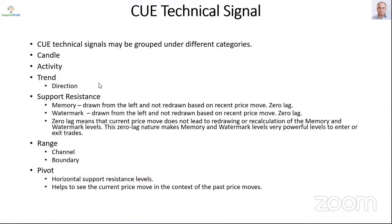We started with technical indicators. In earlier sessions, I mentioned their groupings under different categories. We have already covered candle, then volume or activity, trend category of indicators — direction lines — support resistance category of indicators, memory and watermark, both of which are also zero-level indicators. We covered up to this in the Part 1 video.